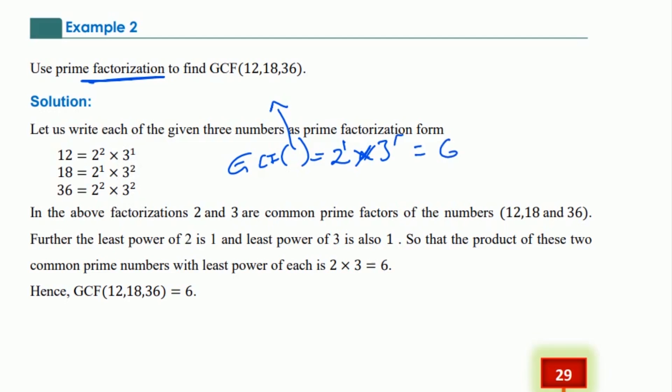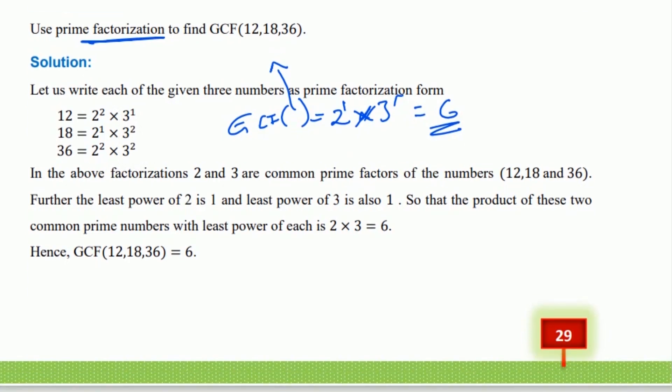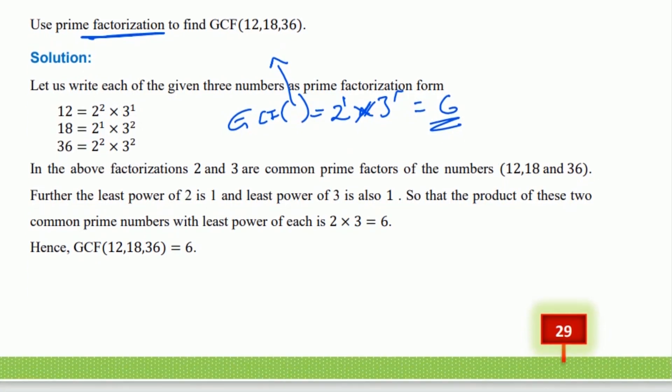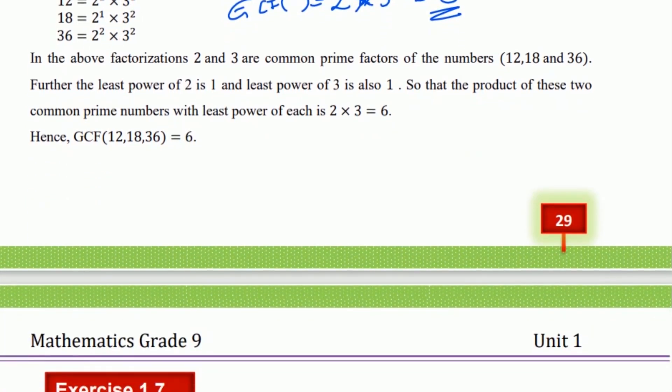The greatest common factor of 12, 18, and 36 is 6.